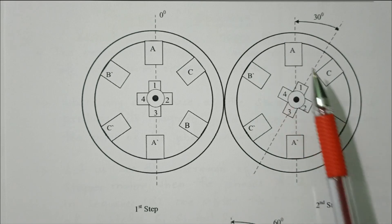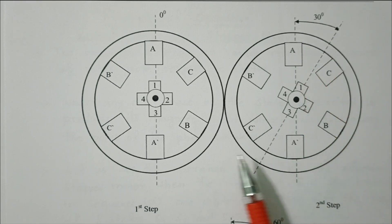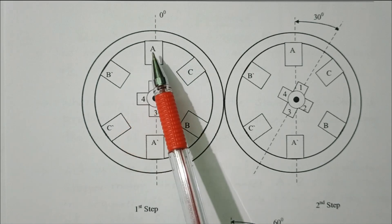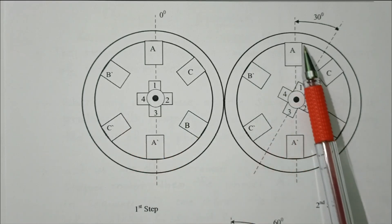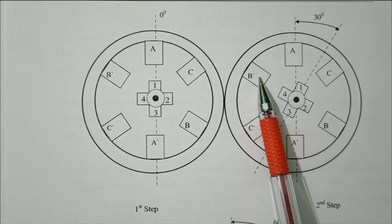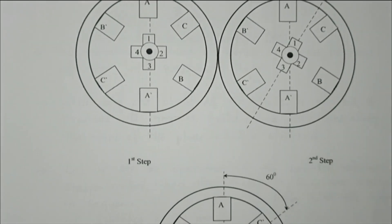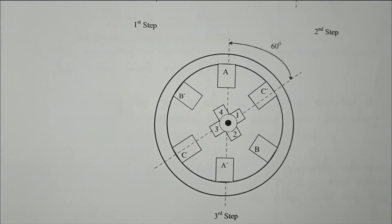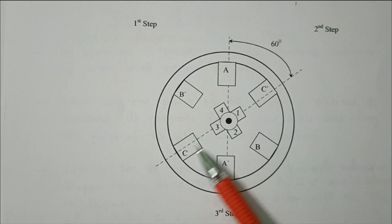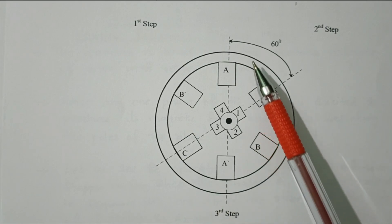We are exciting from coil a to coil b; the rotor aligns with coil b and rotates around 30 degrees. Then the third step: we excite coil c/c-dash. The rotor aligns with c/c-dash — rotor pole 1 aligned with c-dash, rotor pole 3 aligned with c. So another 30 degrees, making a total of 60 degrees rotated.